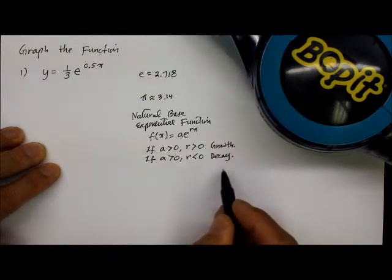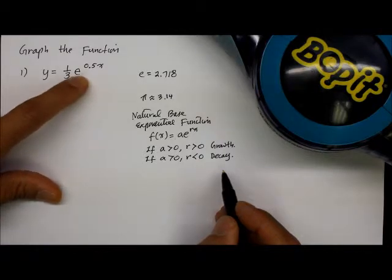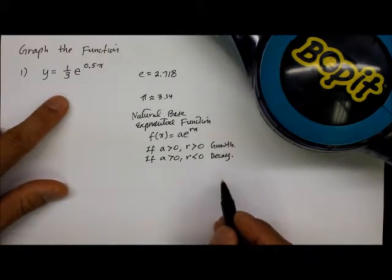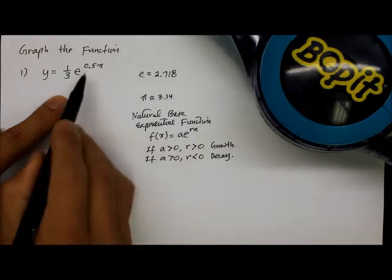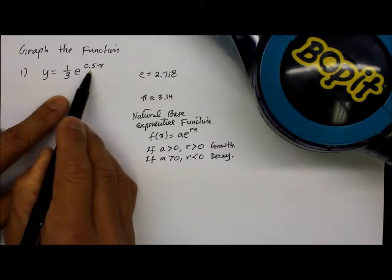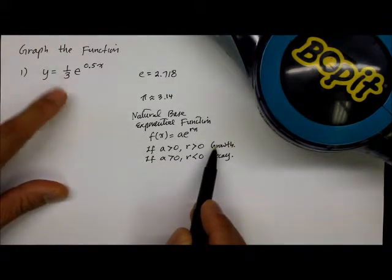So let's get right down to it. Here's an example: y equals one-third times e raised to 0.5x. Can you tell right away if this is exponential growth or decay? Yeah, the coefficient r from x is positive, so it must be exponential growth. That is correct.